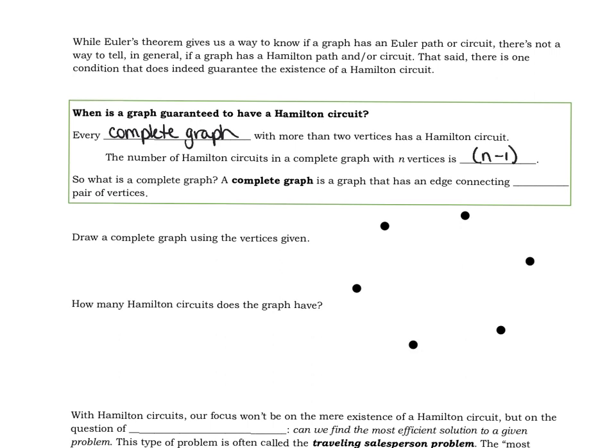I said every complete graph with more than two vertices has a Hamilton circuit. It would probably be good to tell you what a complete graph is. A complete graph is a graph that has an edge connecting every pair of vertices.